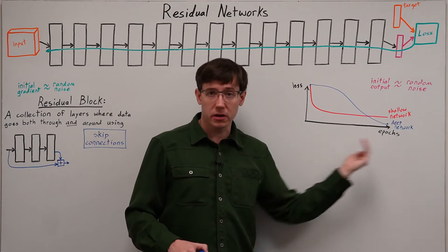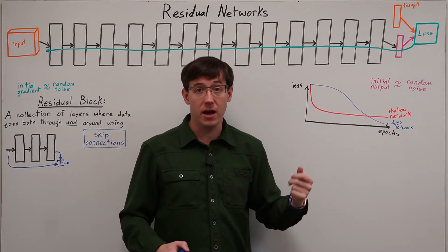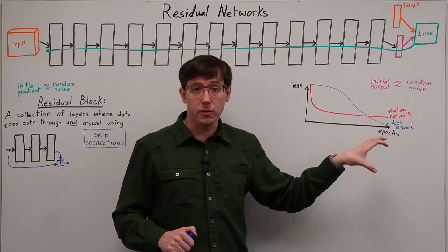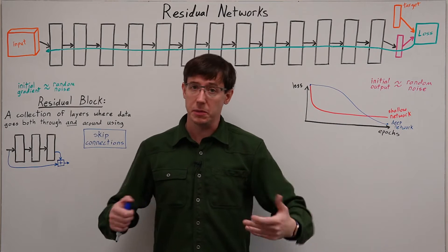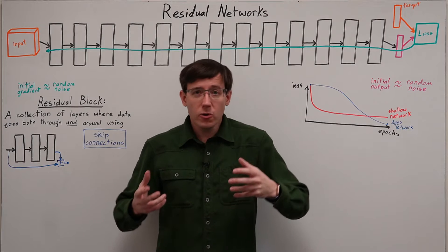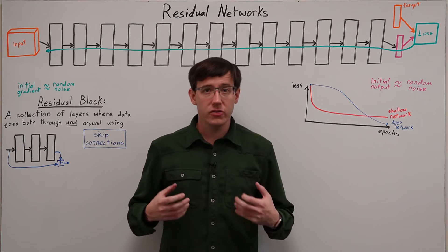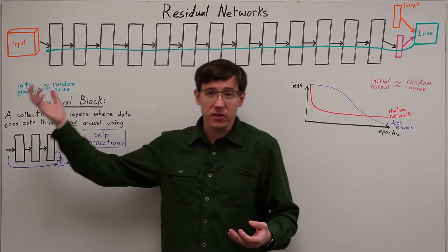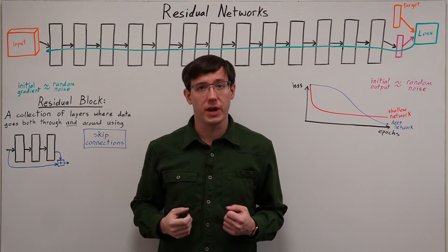And remember, each epoch of training takes longer when we have an enormous data set. And so this can be a big obstacle to practical training of deep networks. To figure out why training gets so much slower as networks get deeper, let's think about what happens when we pass data through a very deep neural network.